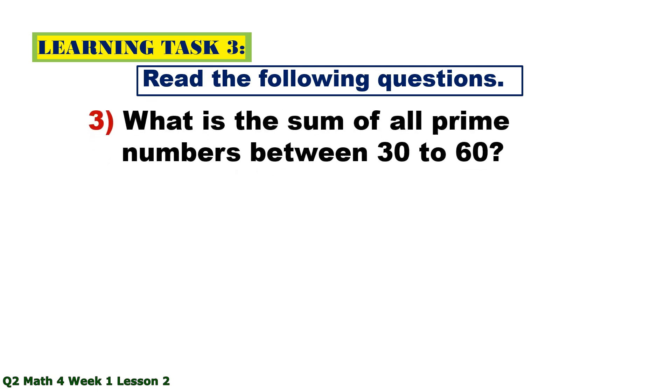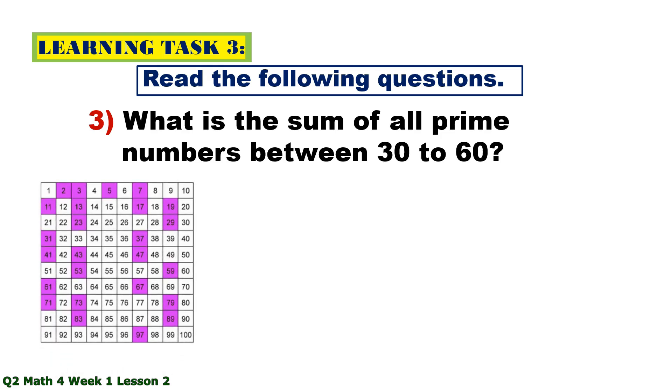Number 3. What is the sum of all prime numbers between 30 to 60? So those prime numbers between 30 to 60 are 31, 37, 41, 43, 47, 53, and 59. And the total is 311.